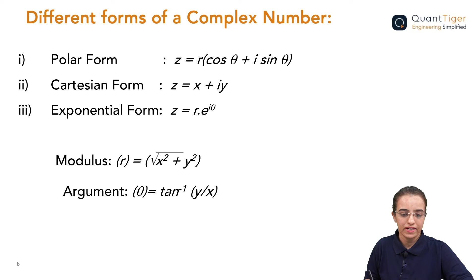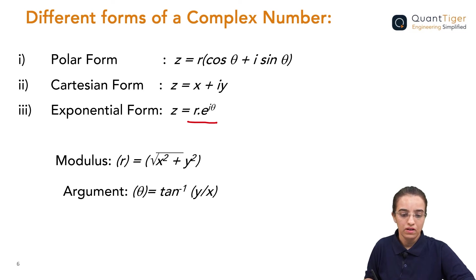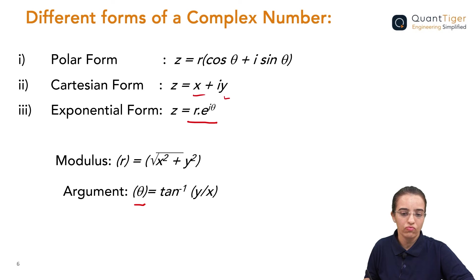In Cartesian form we write z = x + iy, and in exponential form we write z = r·e^(iθ). Here r is the modulus, found by taking the square root of x² + y². Theta (θ) is the argument or angle, found by taking tan⁻¹(y/x), where y is the imaginary part and x is the real part.